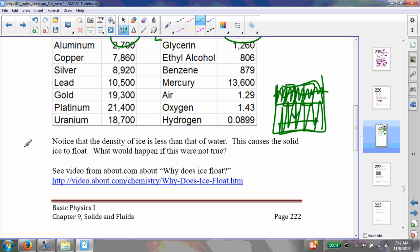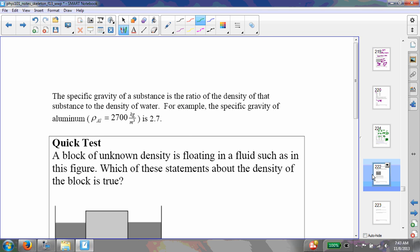So it's sort of an interesting thing. There's a video here about why does ice float. I'll leave that for you to look at on your own. Specific gravity is just the ratio of the density of an object to the density of water.